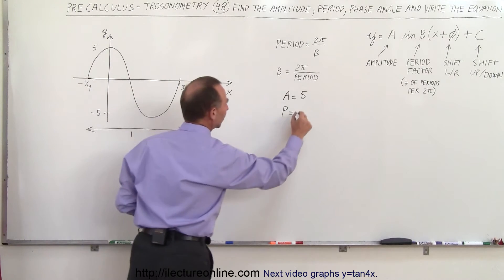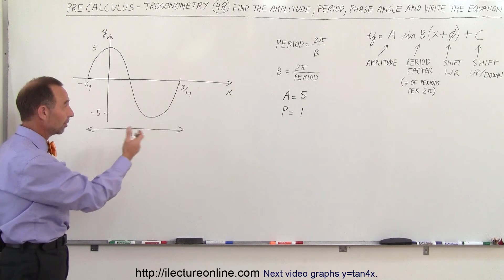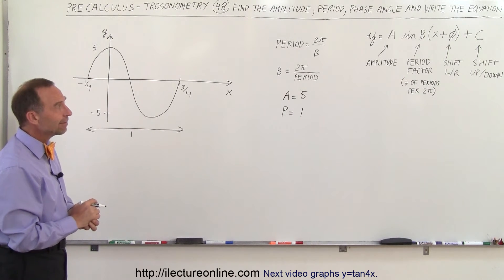It looks a little different. Normally the period is in terms of pi, but in this example it's simply from minus one quarter to plus three quarters, so the period is equal to one.